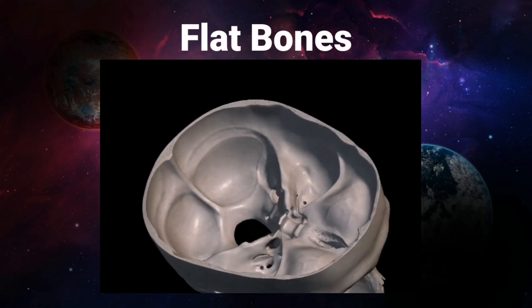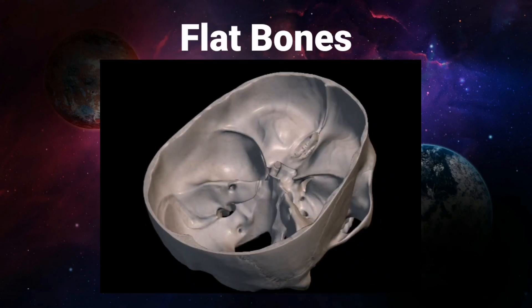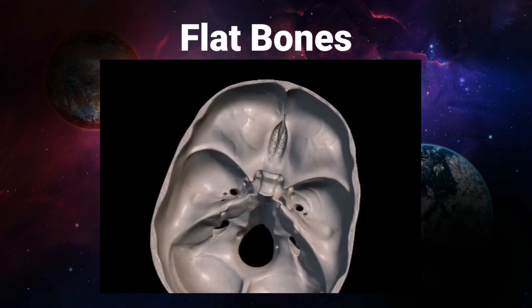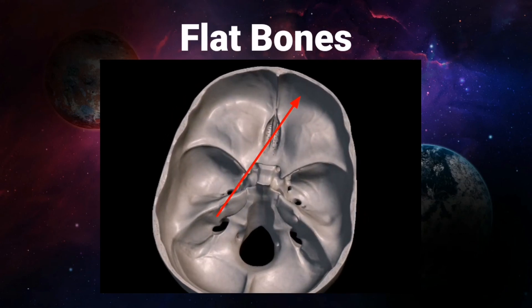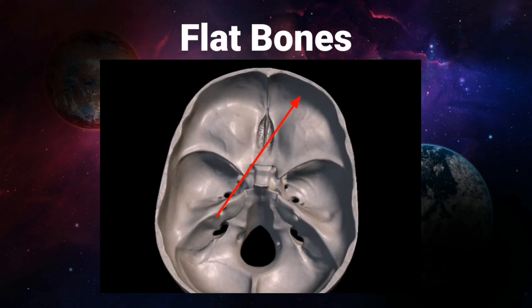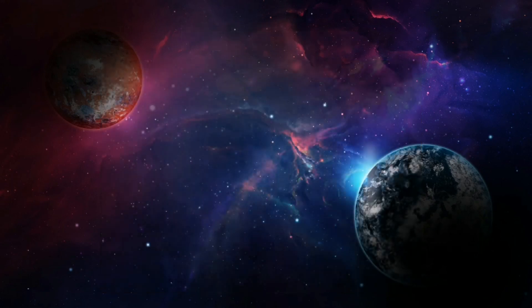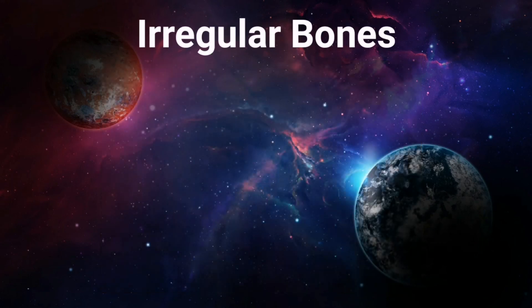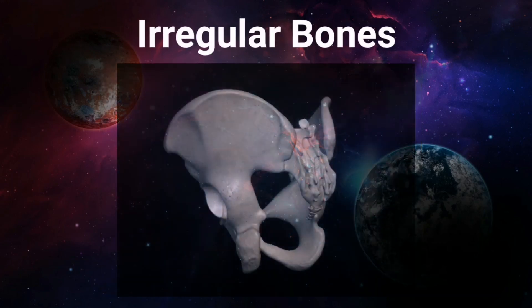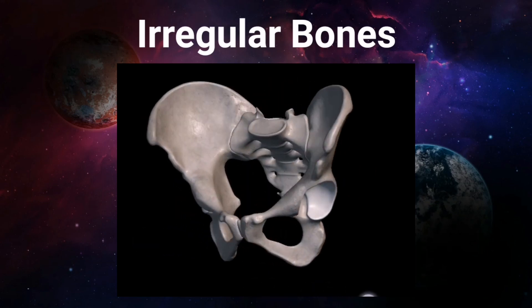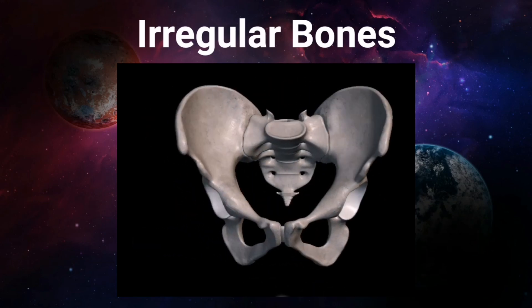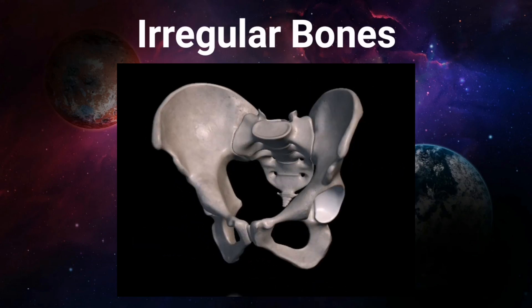Flat bones are flat like plates — for example, the bones of the human skull, which are flat in structure. Other examples include the ribs, sternum, and scapula.